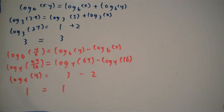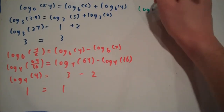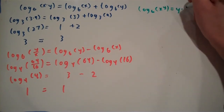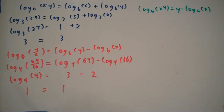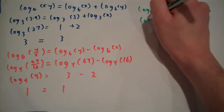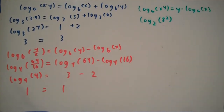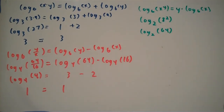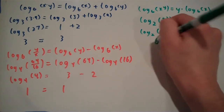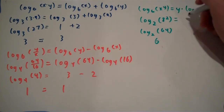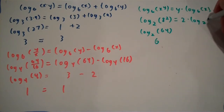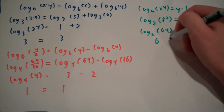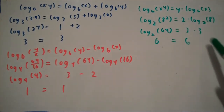Our third logarithmic property is: if we have log base b of x to the y, we can rewrite that as y times log base b of x. For an example, let's say we have log base 2 of 8 squared. If we do this the normal way, 8 squared is 64, so we have log base 2 of 64. Now, 2 to the 6th gives us 64, so this log is 6. The other way, we have 2 times log base 2 of 8. And 2 to the 3rd gives us 8, so we're going to have 2 times 3. And of course, 2 times 3 is 6. So this logarithmic property works out as well.